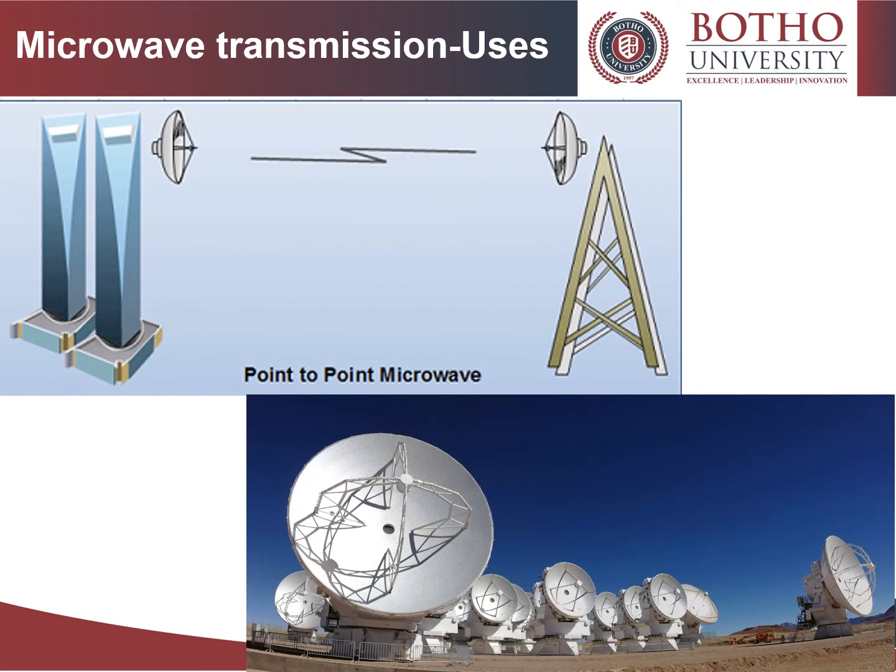Microwave radio transmission is commonly used in point-to-point communication systems on the surface of the earth, in satellite communications, and in deep space radio communications. Other parts of the microwave radio band are used for radars, radio navigation systems, sensor systems, and radio astronomy.